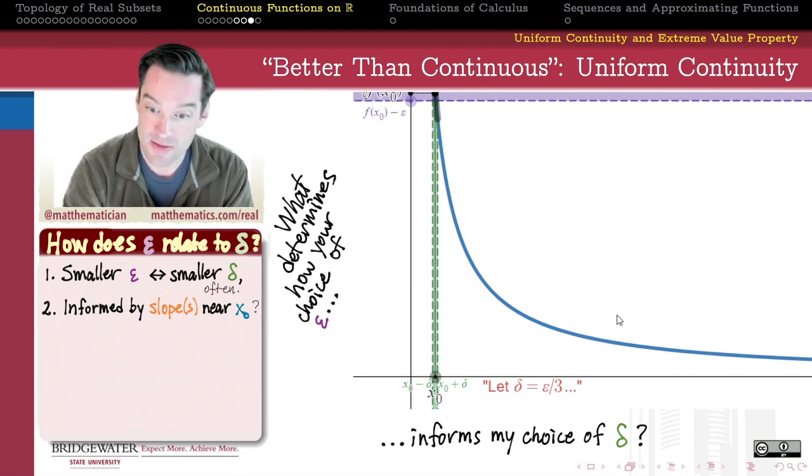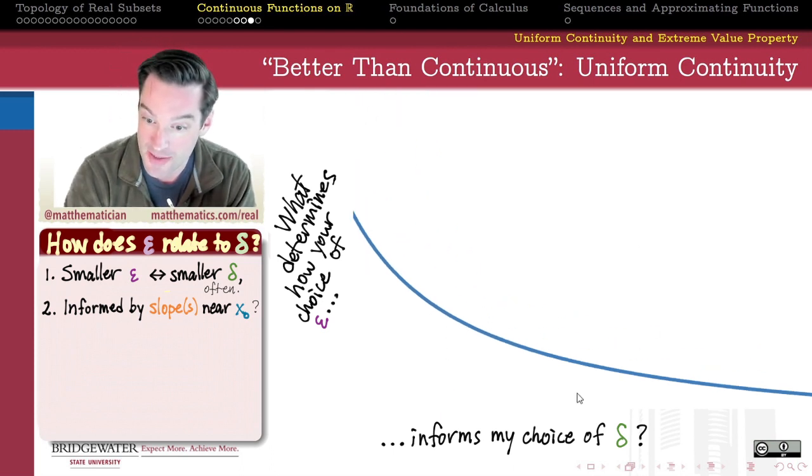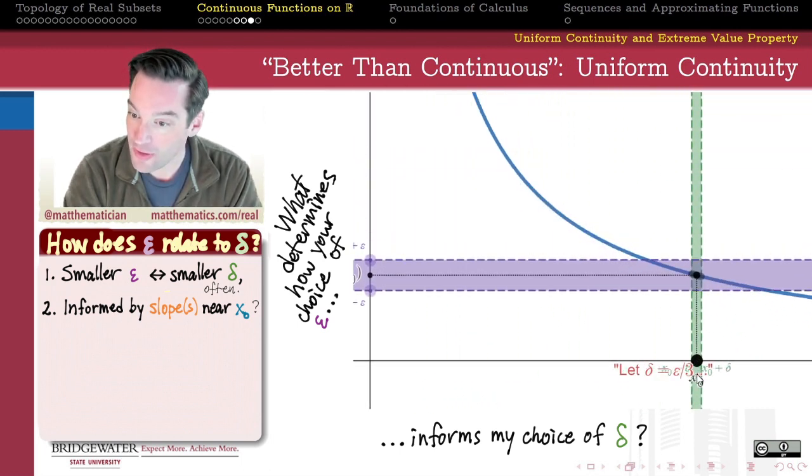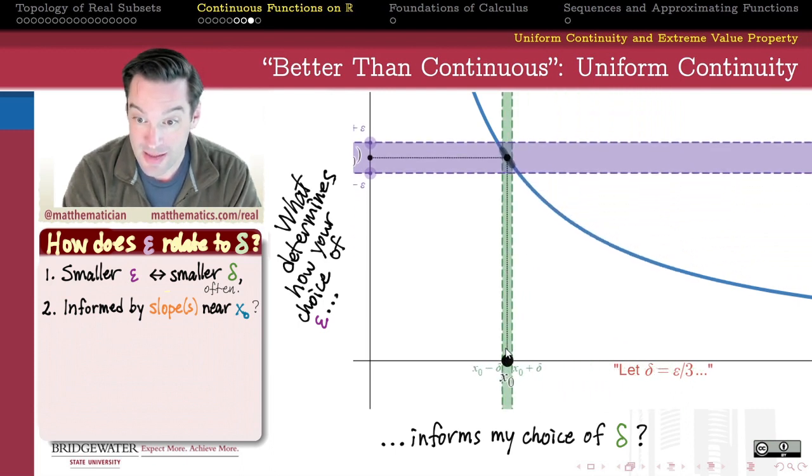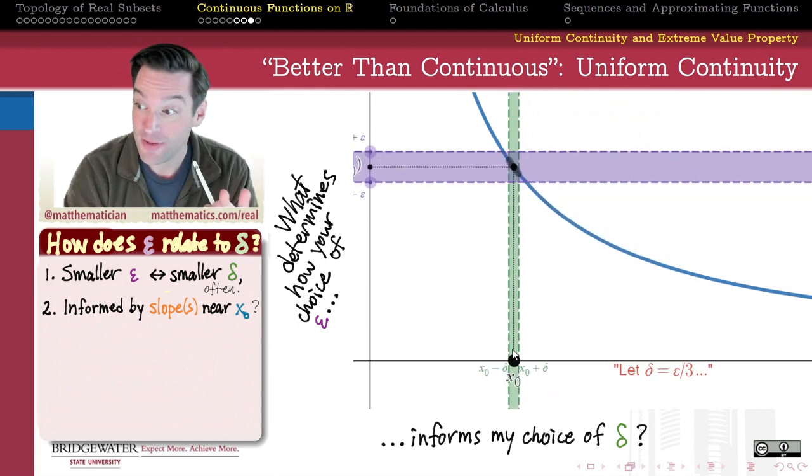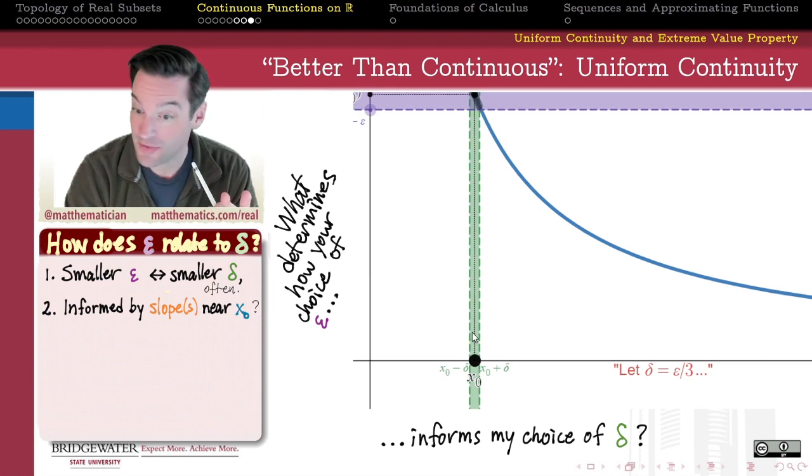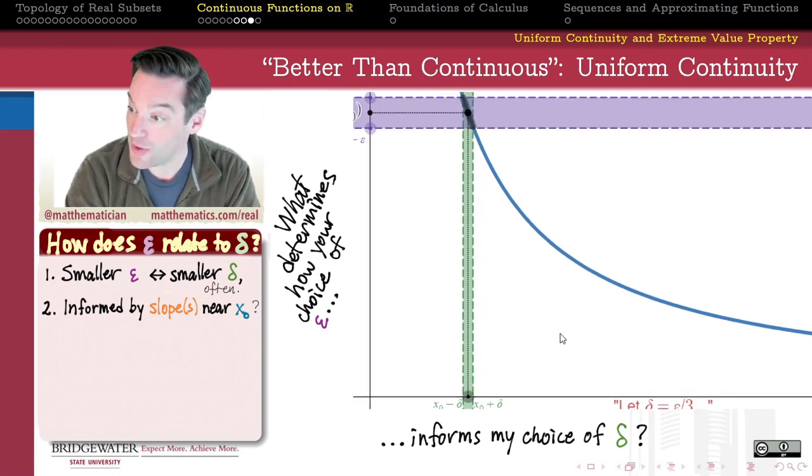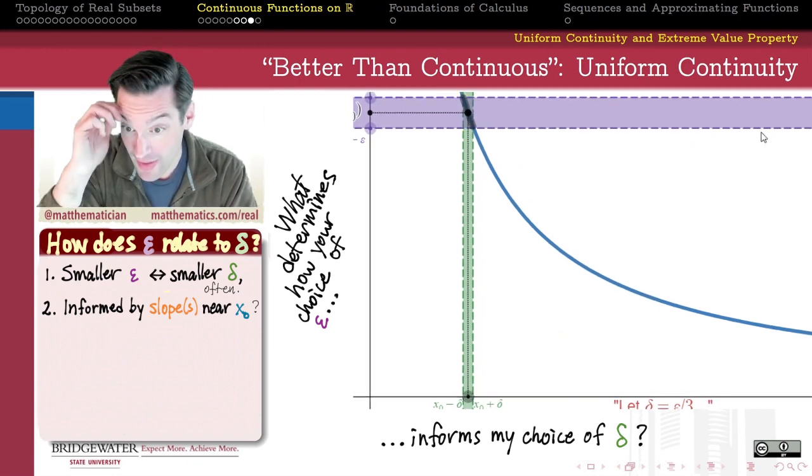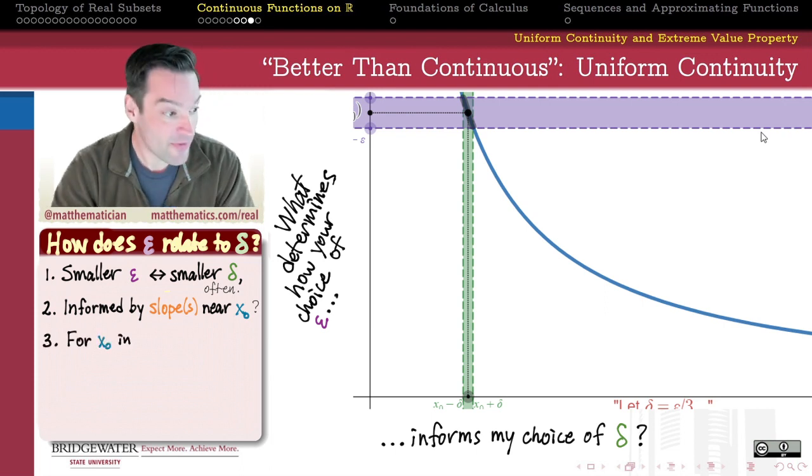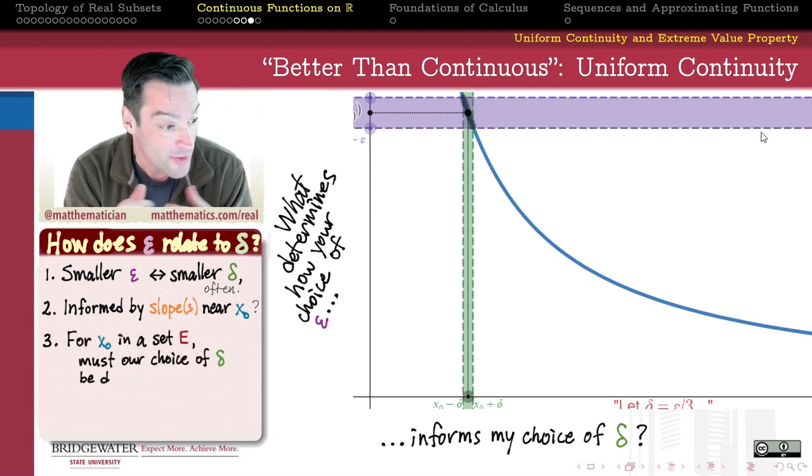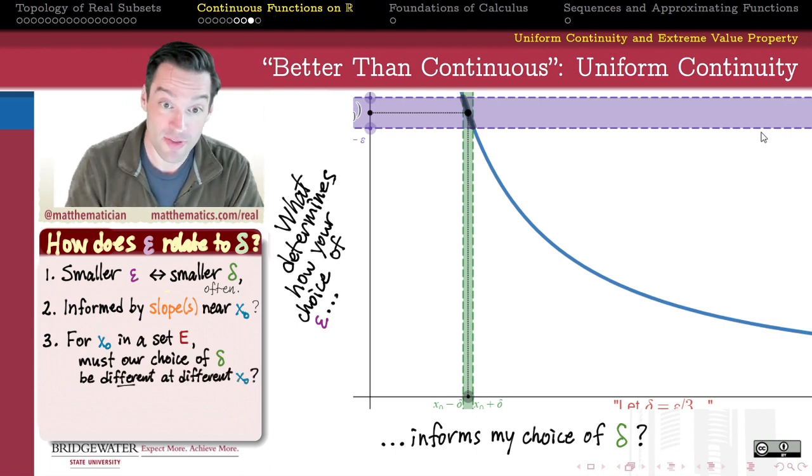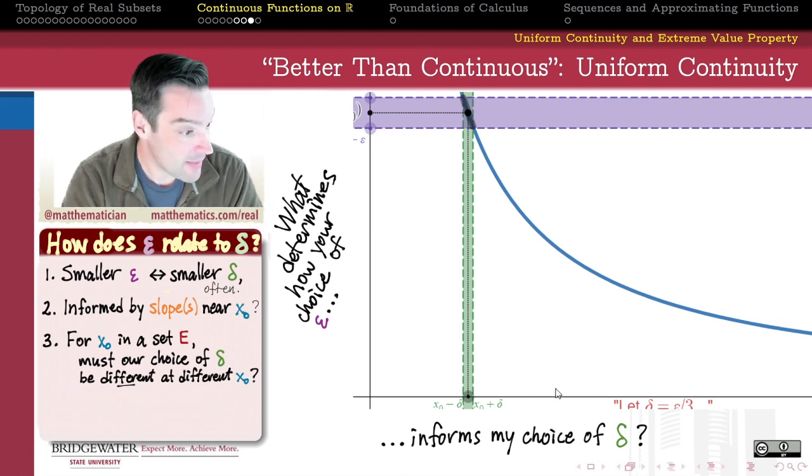But the big question that motivates this definition that we're going to wrestle with today is this question about whether the delta that I choose is good enough to work for all of the x values that are in the domain of interest for my function. Or might I potentially need to choose different deltas depending on which x value, which point that I happen to be at.